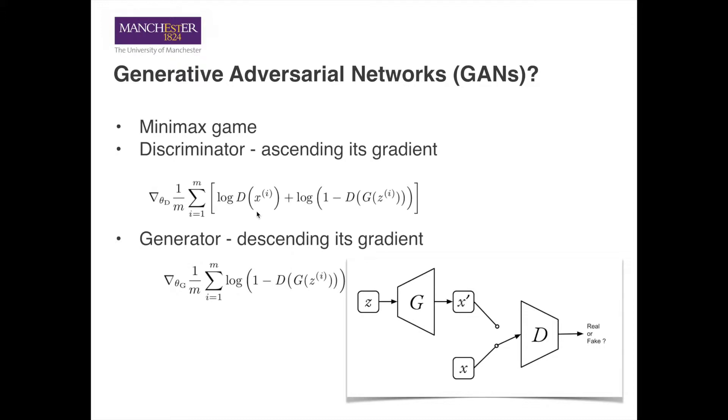Given the real data X, we want the discriminator D to predict it to be real with probability as close to 1 as possible. In other words, we want to maximize the value of function D given X. Conversely, given the generated data, we want the discriminator to predict it to be fake.